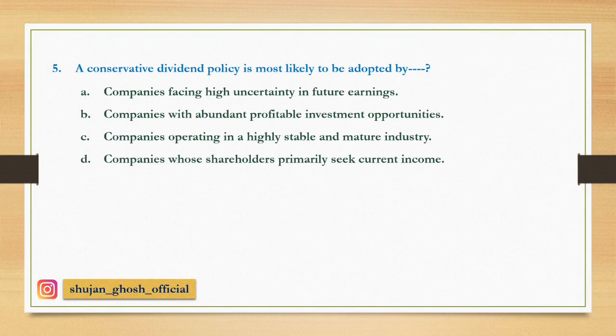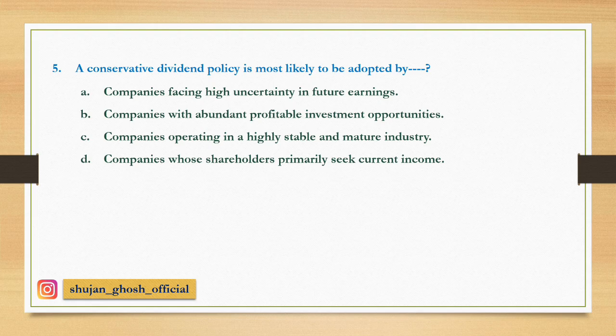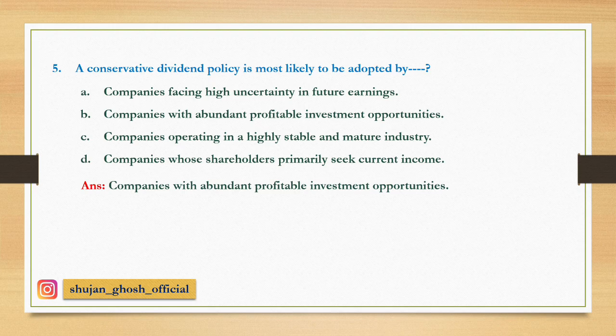Question number five: A conservative dividend policy is most likely to be adopted by — option A: companies facing high uncertainty in future earnings. B: companies with abundant profitable investment opportunities. C: companies operating in a highly stable and mature industry. D: companies whose shareholders primarily seek current income. A conservative dividend policy is the opposite of liberal — most profits are retained in the business to invest and expand. Answer: companies with abundant profitable investment opportunities.